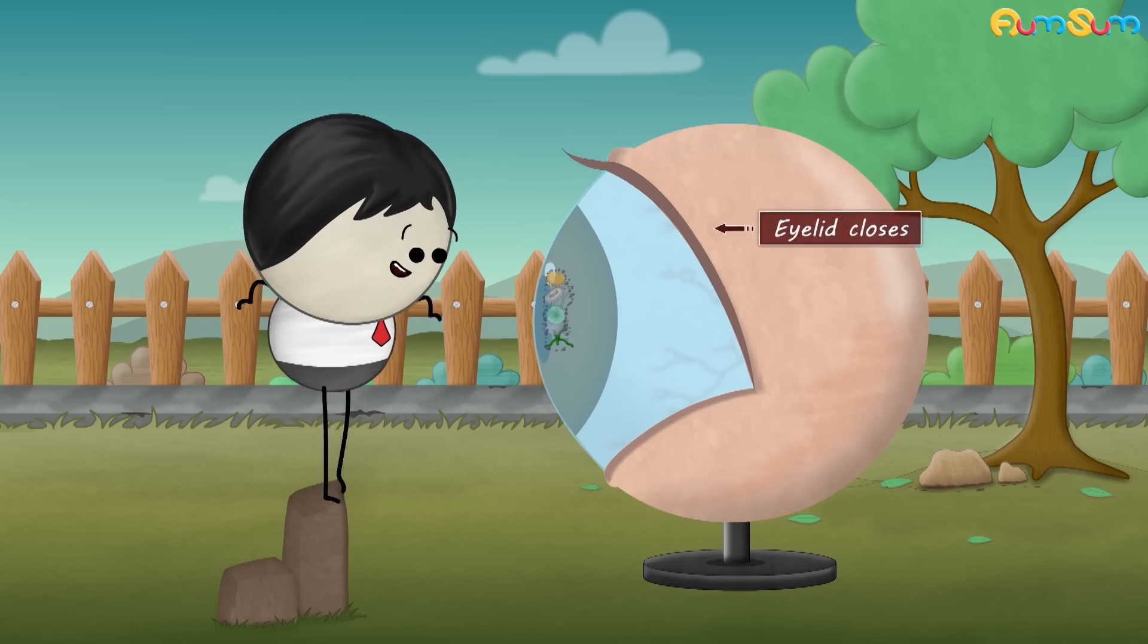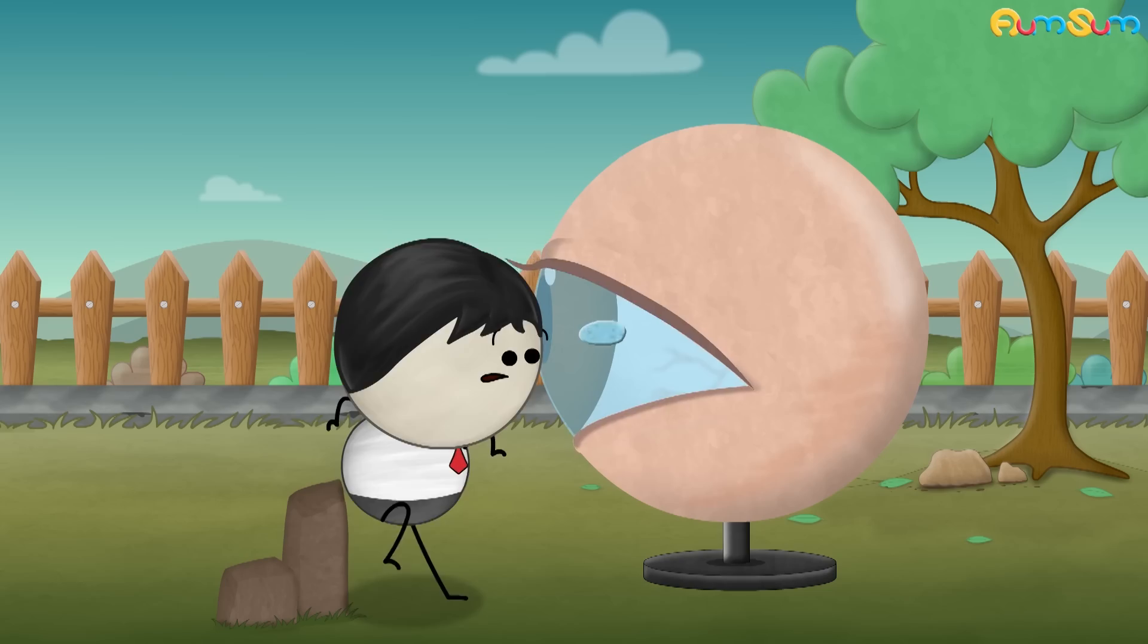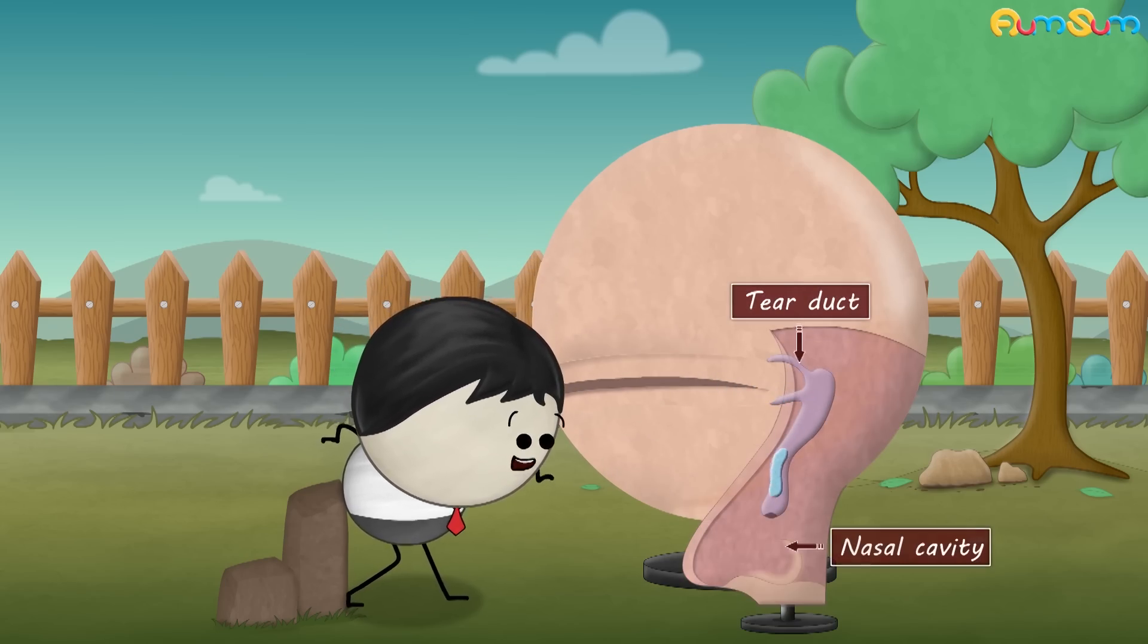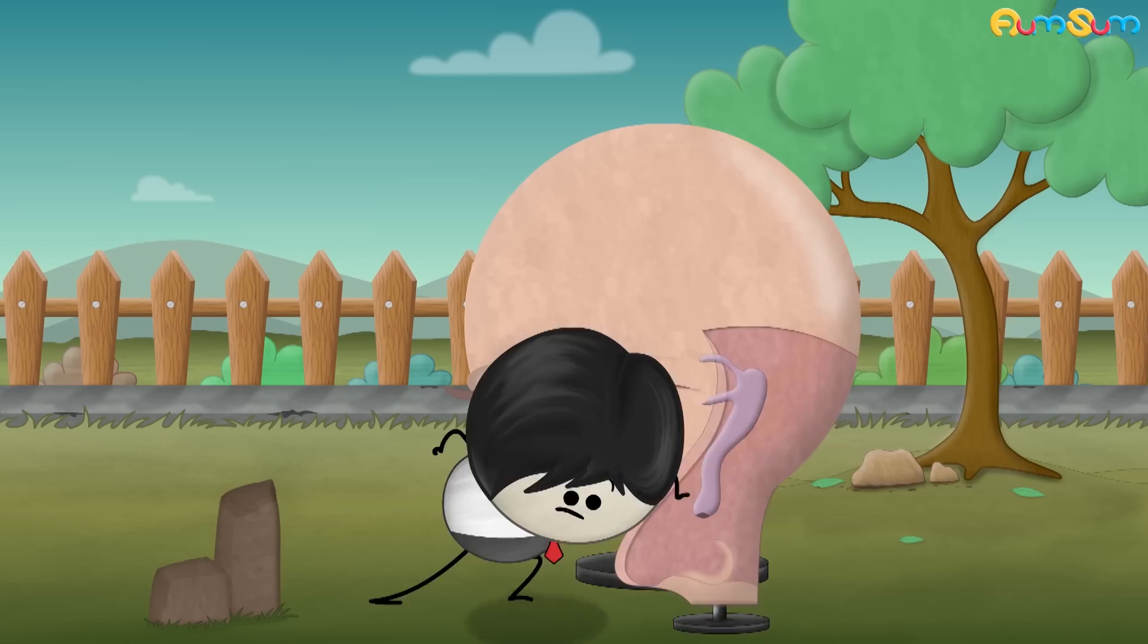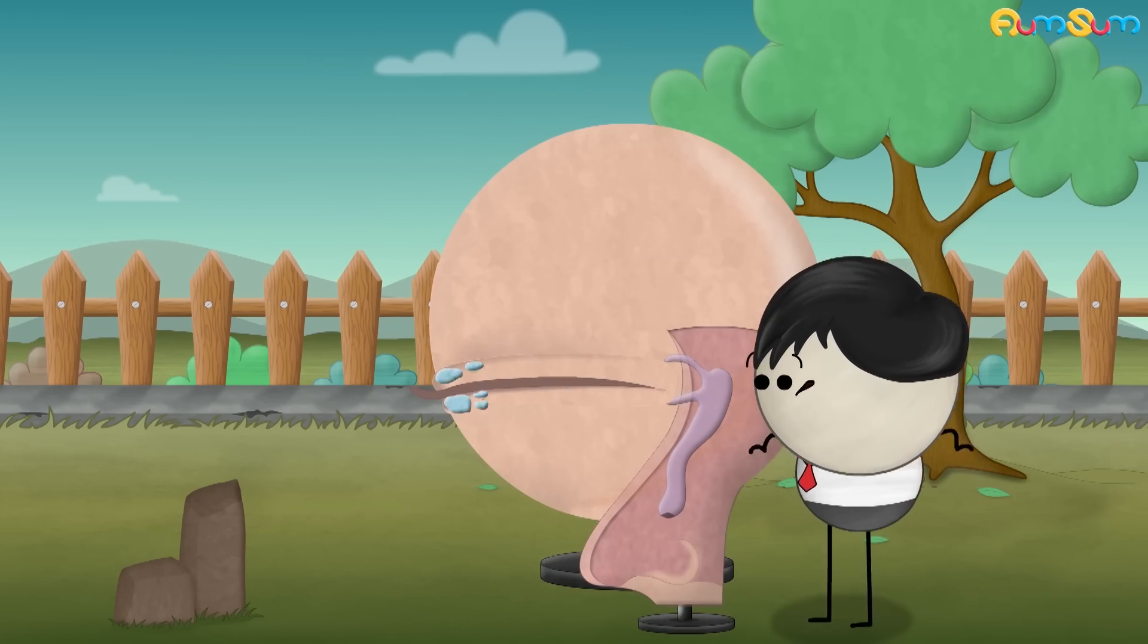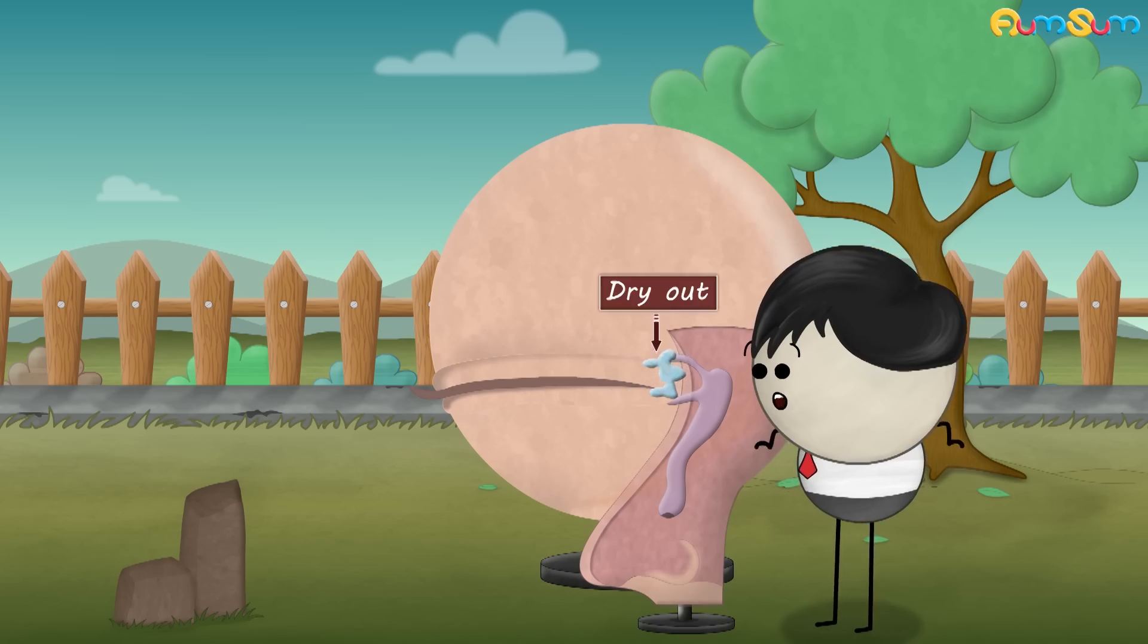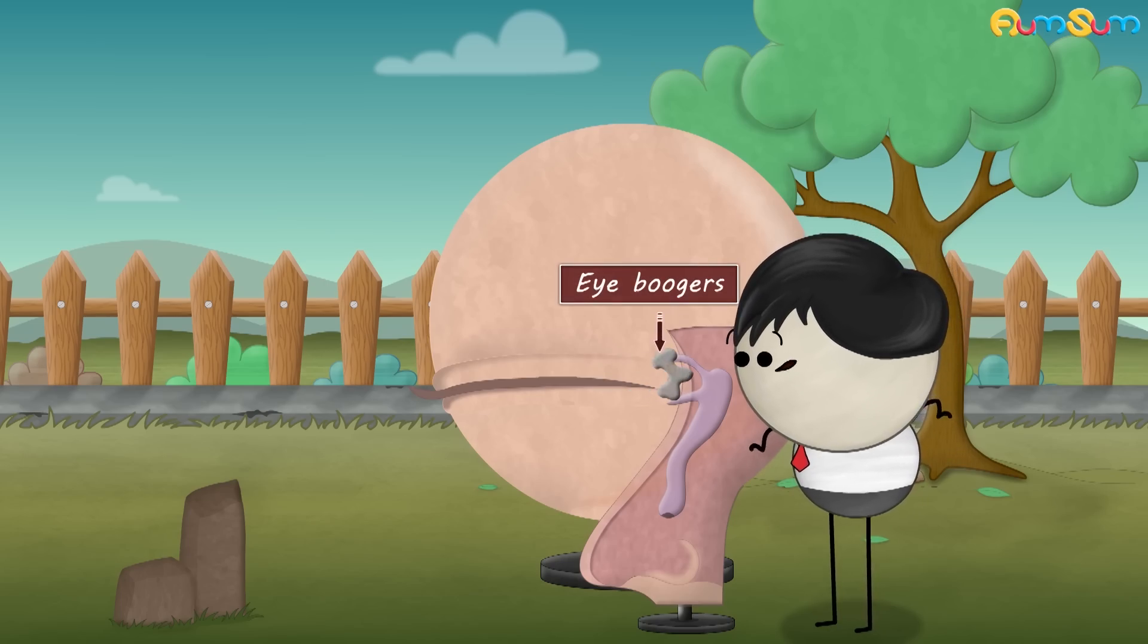When we blink, the eyelid closes and if there is any dust or germ, it gets discarded along with some tear film through the tear duct into the nasal cavity. But while sleeping, since we don't blink, the tear film, dust and germs get collected in the inner corners of our eyes and start to dry out, forming eye boogers.